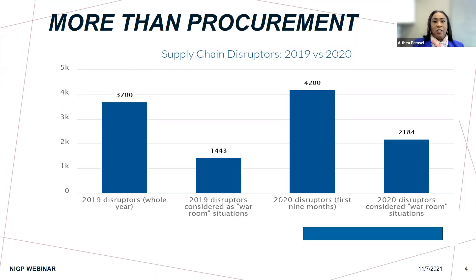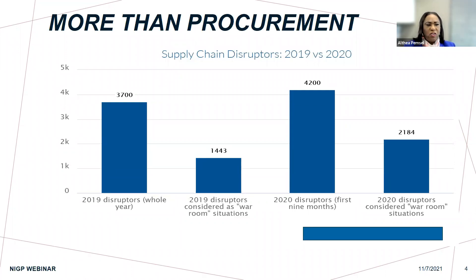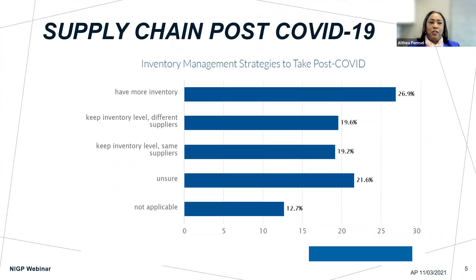That impacts procurement. We saw disruptors in ways we've never seen before. It also causes us to think about how we can be the stars of our entities by having everything that's needed when there is a crisis. We probably know now from the pandemic and COVID-19 to not wait until there's an actual emergency before we have relationships. I want you to look at supply chain post-COVID and look at the inventory increases.